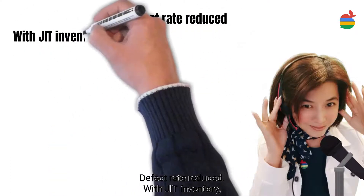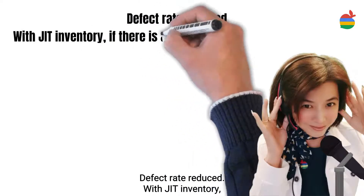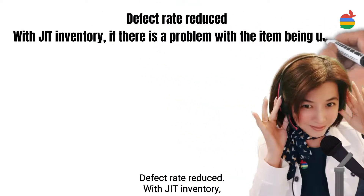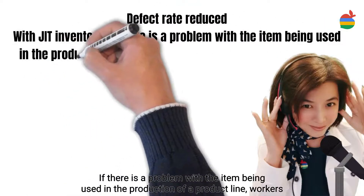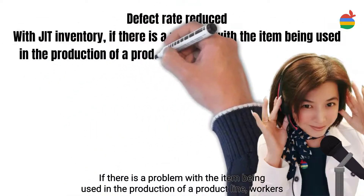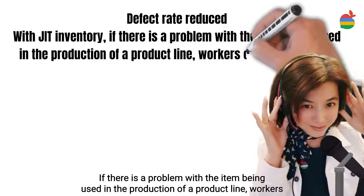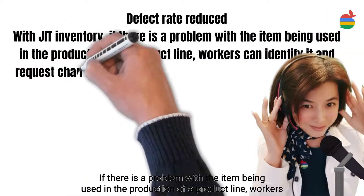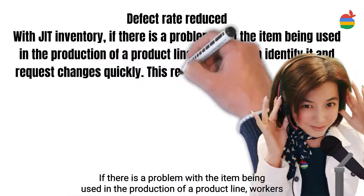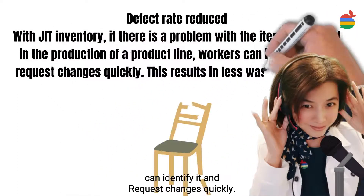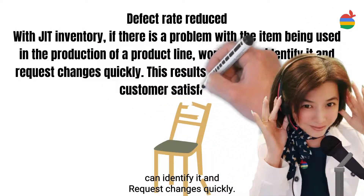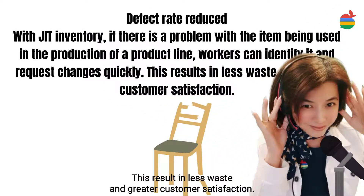Defect rate reduced: with JIT inventory, if there is a problem with the item being used in the production of a product line, workers can identify it and request changes quickly. This results in less waste and greater customer satisfaction.